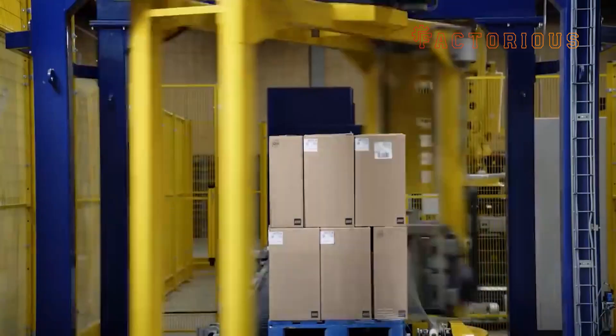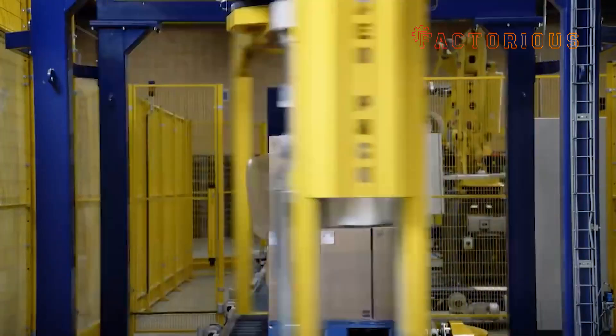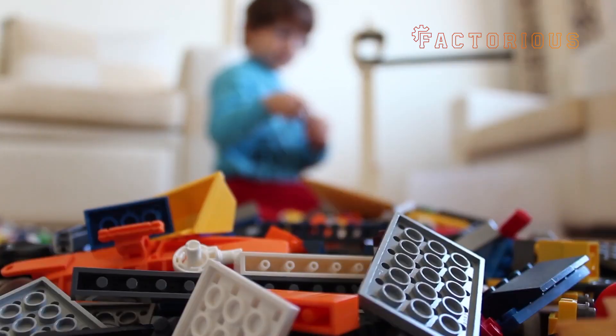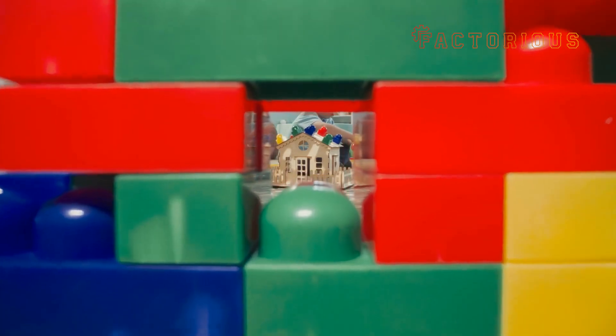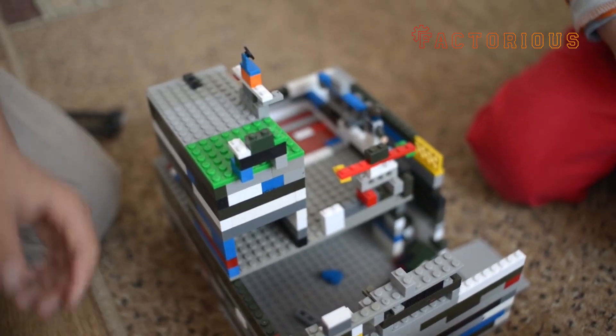Each instruction manual is also a work of design psychology. Lego tests them with kids to ensure the steps are clear, colors are visible, and the flow feels achievable. If a child can't follow a step, that page is redesigned.